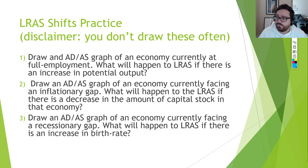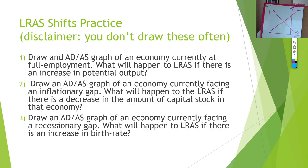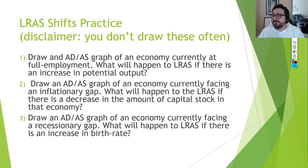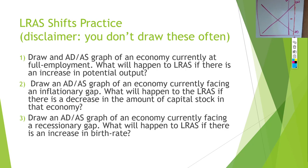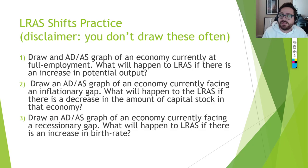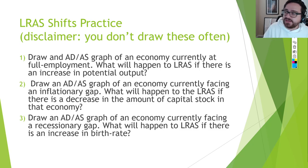For question three: we are in a recession — a recessionary gap. What happens to LRAS if there's an increase in birth rate or a reduction in infant mortality? These are long-term population changes — they don't help us produce more right now, but they will in the future. The economy is in a recession, so the graph has current production lagging behind LRAS. With an increase in birth rate, our ideal long-term production will be larger, so LRAS shifts to the right.